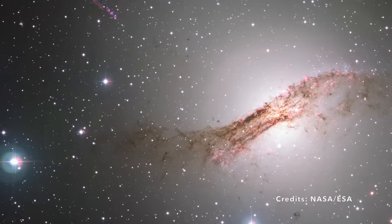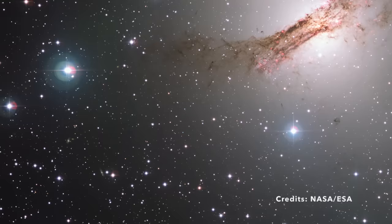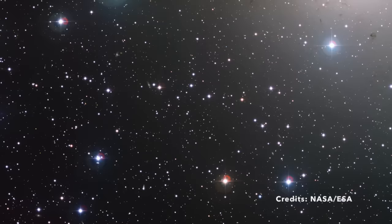But what's truly spellbinding is its location. Centaurus A is situated a staggering 12 million light-years away from us. To put that into perspective, if you were to travel at the speed of light, that's about 186,282 miles per second, it would take you 12 million years to get there.